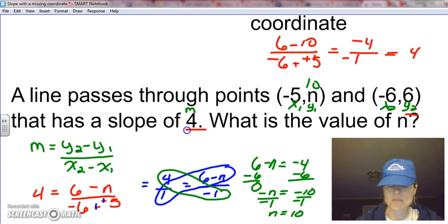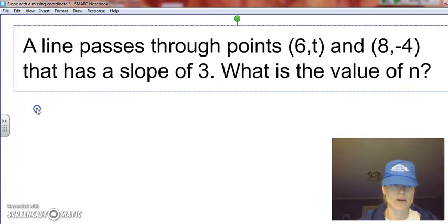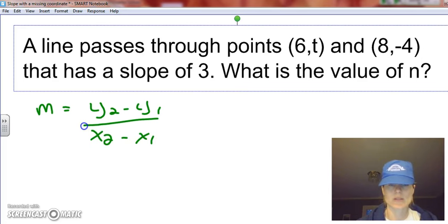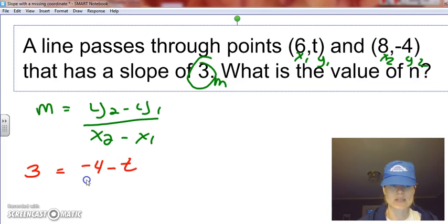A lot of times proportions work out best when solving these, and sometimes you can just look at them and figure them out. So let's look at another example. Again, this is the same type of problem. Slope is y2 minus y1 over x2 minus x1. So we'll go through and identify our slope, which is our m. We have x1, y1, x2, y2, so we're just going to plug in each part. My m is 3, and then we have y2 is -4 minus y1, which is t, over x2, which is 8 minus x1, which is 6.